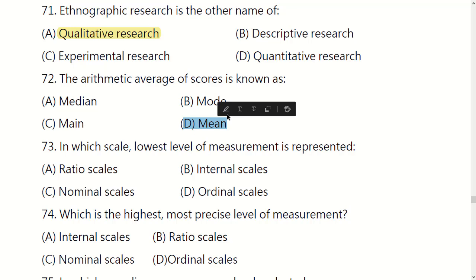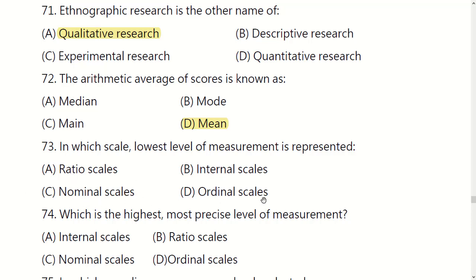The arithmetic average of scores is known as: median, mode, main, or mean. The right option is: mean.